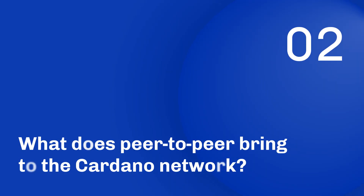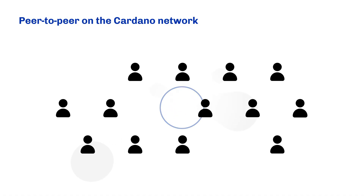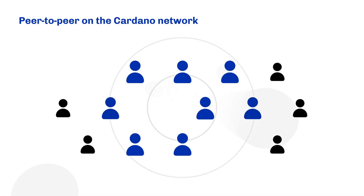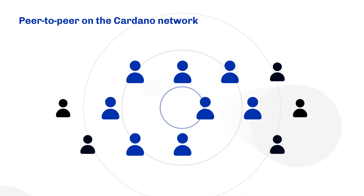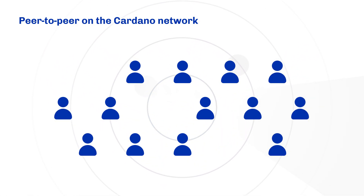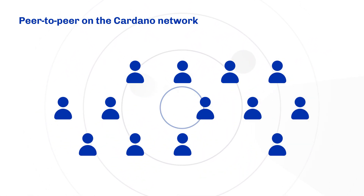Marcin, how does peer-to-peer come into this? What is peer-to-peer bringing to the Cardano network? Peer-to-peer brings to the network automatic discovery of available peers that are registered on the network, on the chain, and automatic creation of connections between the peers we want. So it's both discovery from the chain and then constructing connections between the peers.